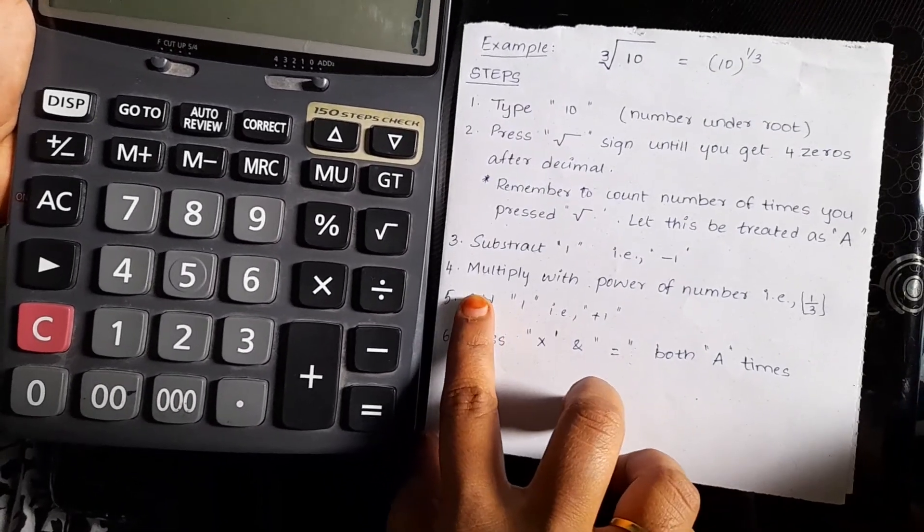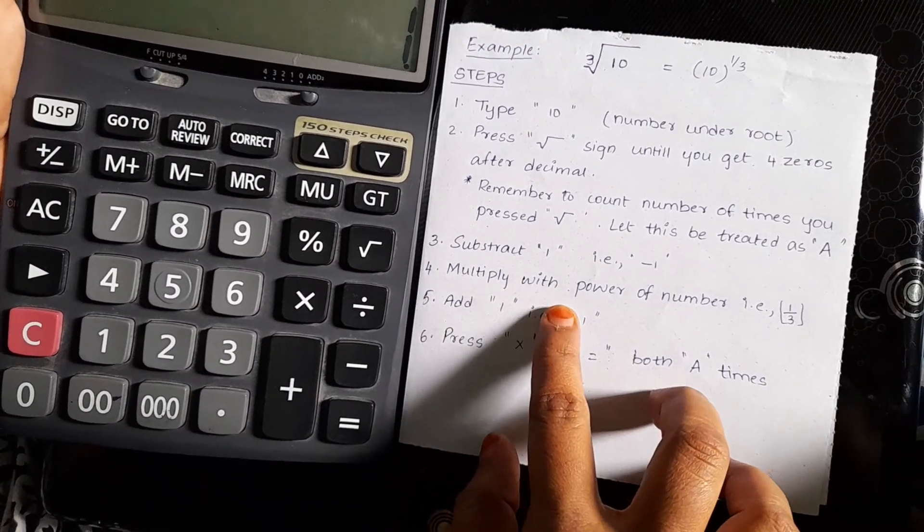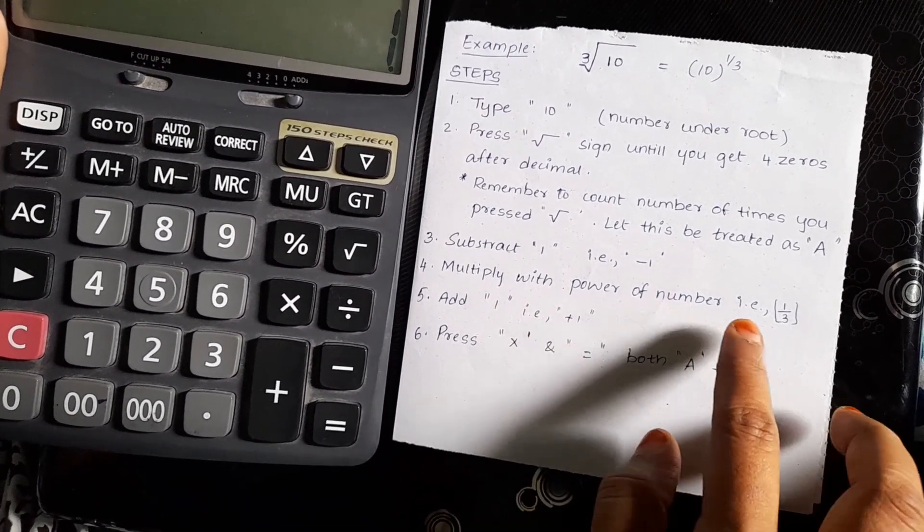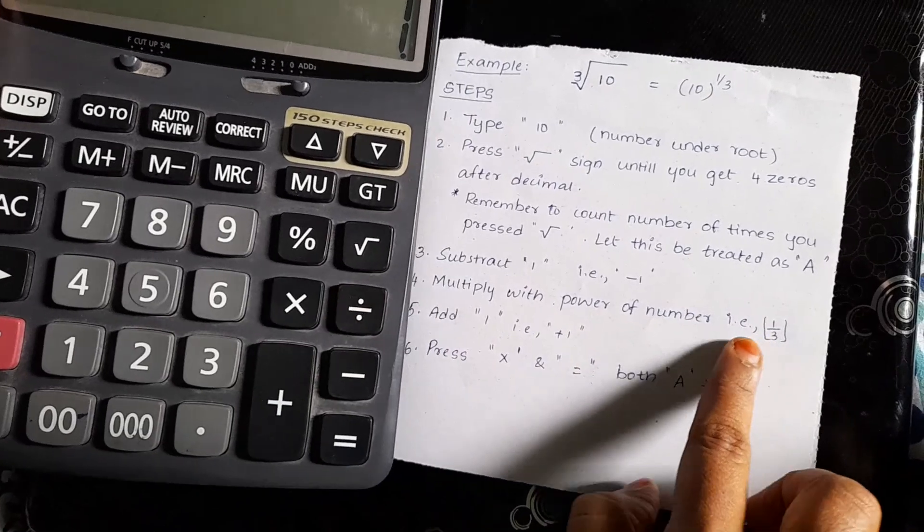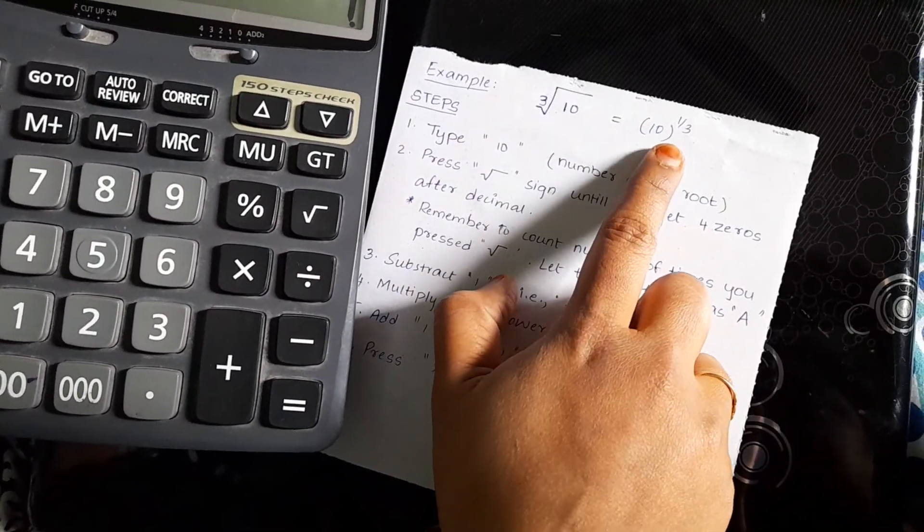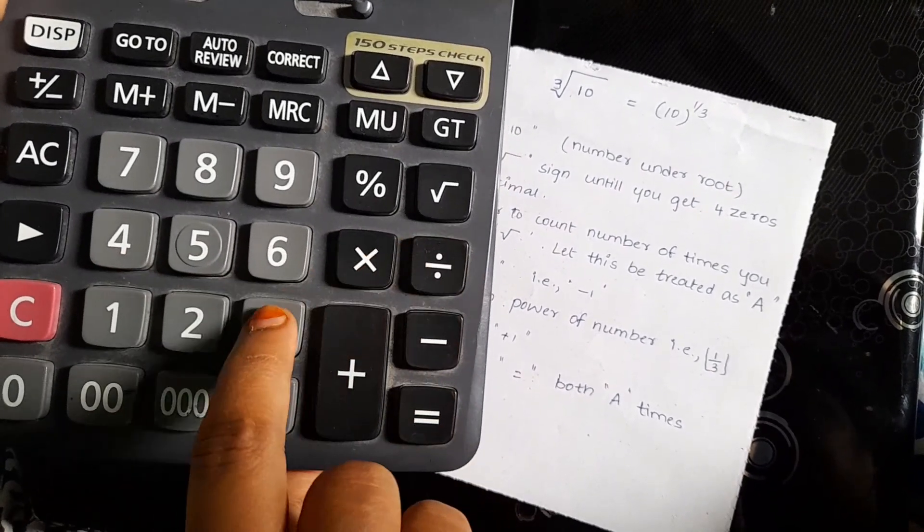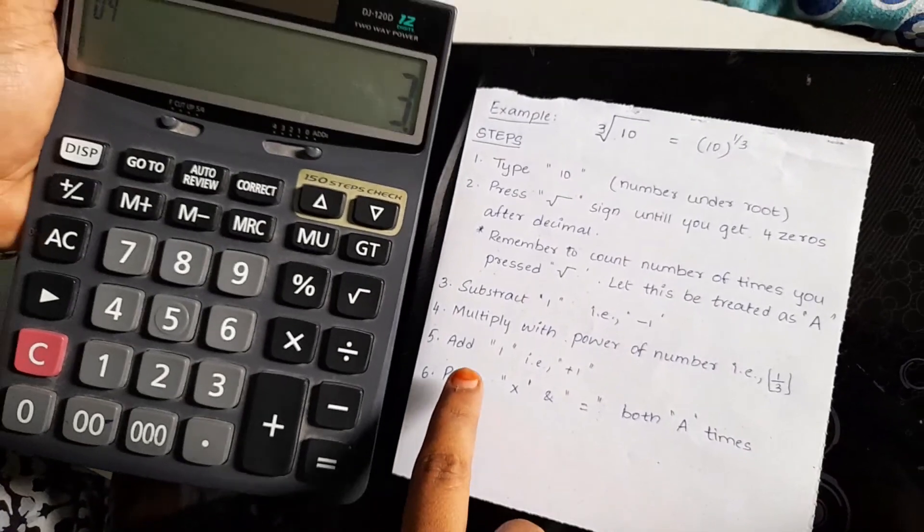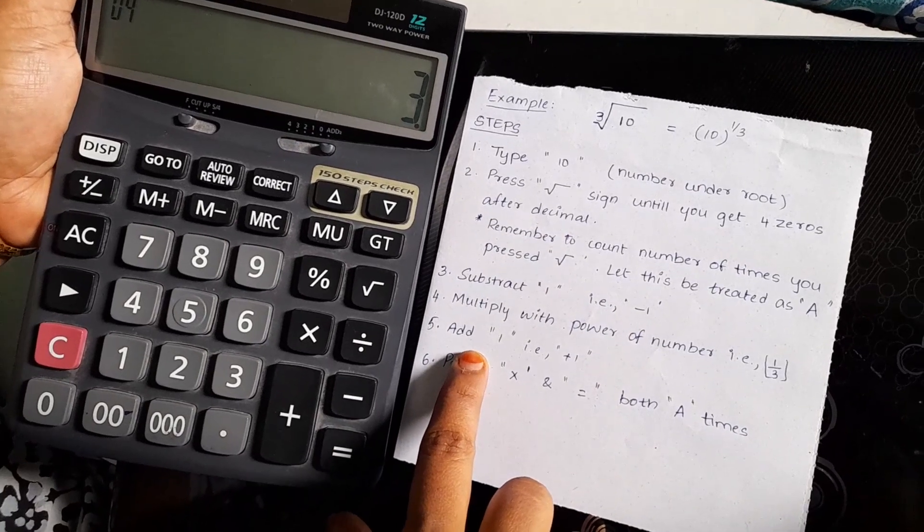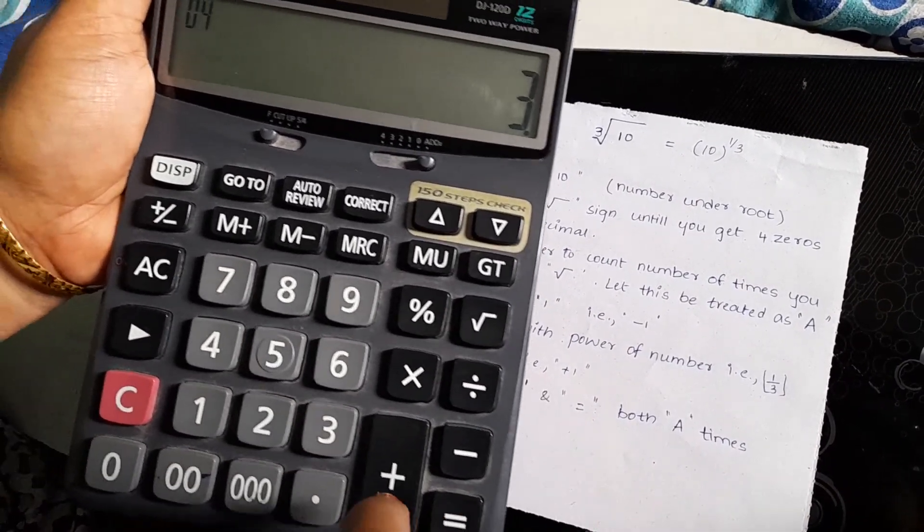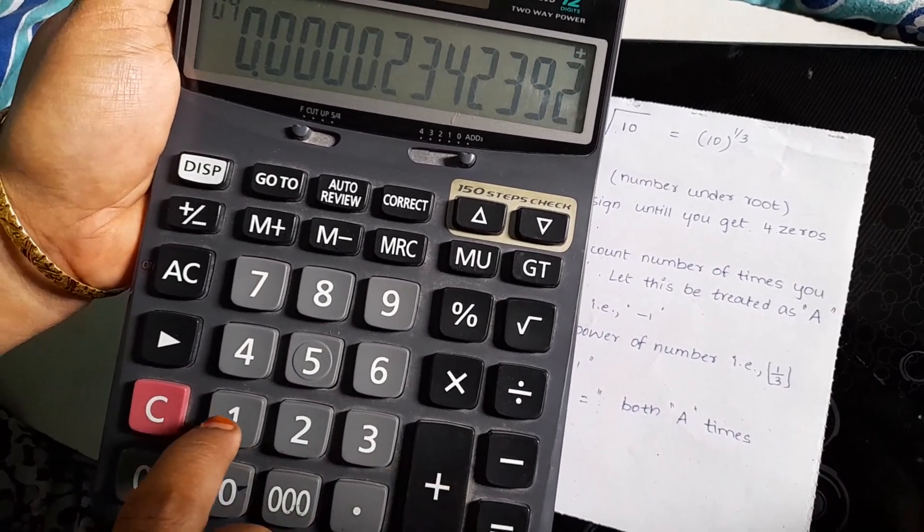And in the fourth step, I need to multiply with power. So, that is, in our example, it is 1 by 3. And in the fifth step, I need to add 1. That is, plus 1.